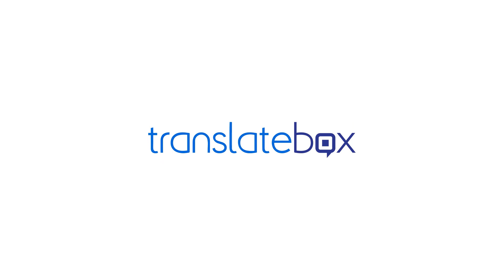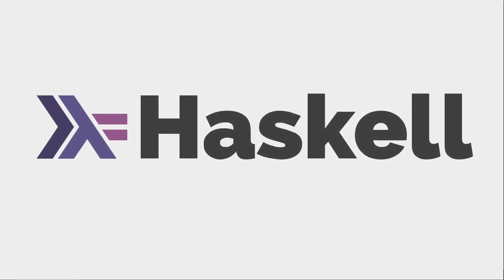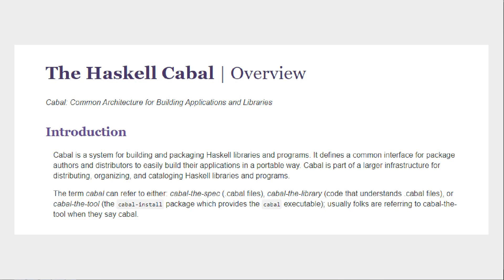This video is supported by Translatebox. So far in this series we have talked about different aspects of Haskell, yet we have never really talked about how to build a whole project or library. We've talked about compilation, but we haven't talked about the build tools. We are going to talk about the Haskell Cabal, which is the common architecture for building applications and libraries. Cabal is not just a build tool — it will help us to install and update packages and manage different versions for our dependencies.